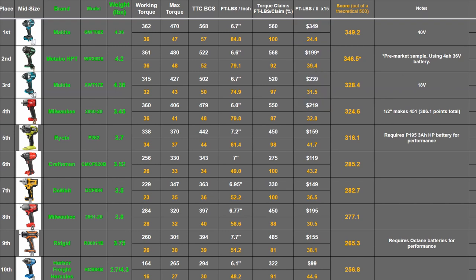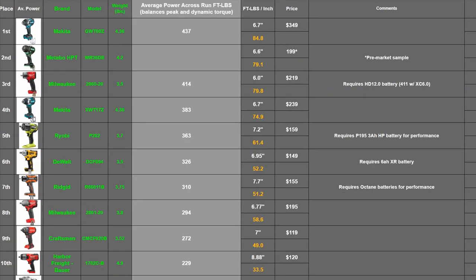Now the other rank lists we have that's been popular among those of you who could care less about money, it's our average power ranking, which scores tools based on their power across a run alone, regardless of anything else. The new HPT gets 416, even a couple points up on the Milwaukee with an HD 12.0 or XC 6.0 shown here. Again though, it gets an asterisk here.